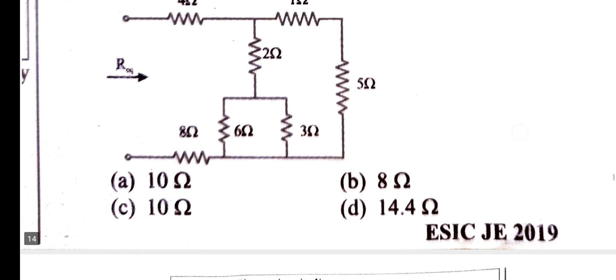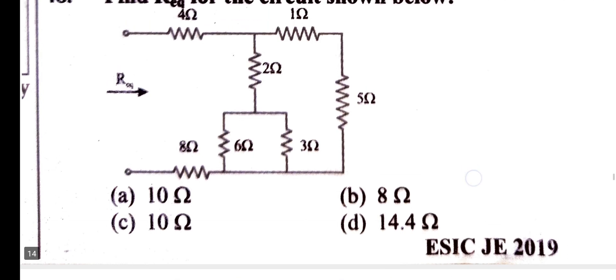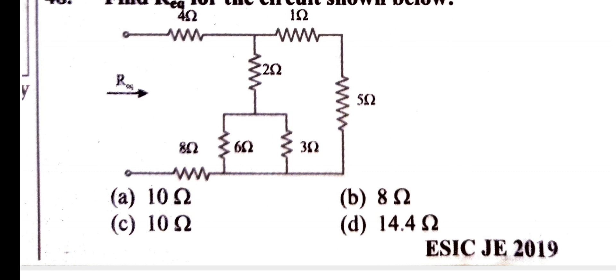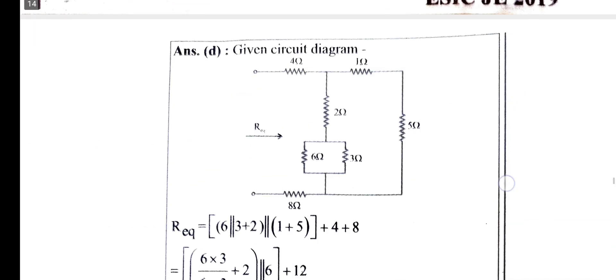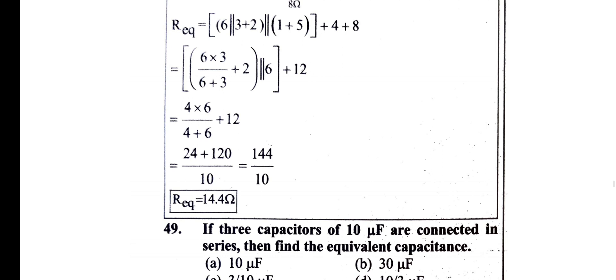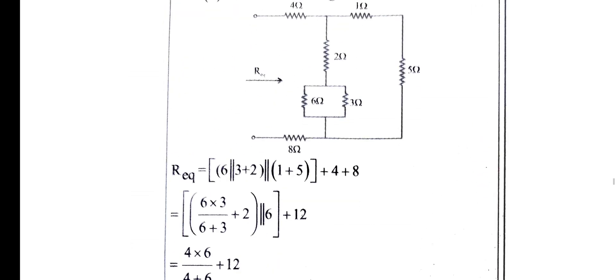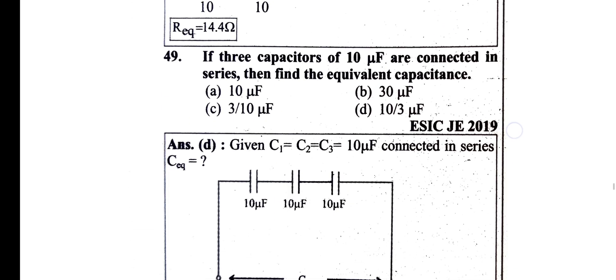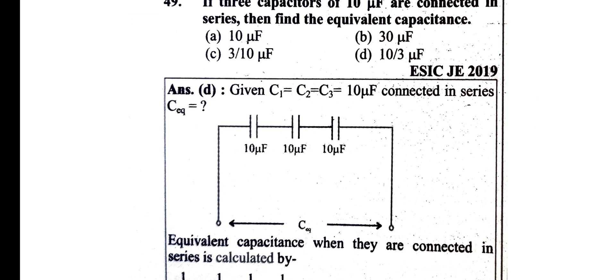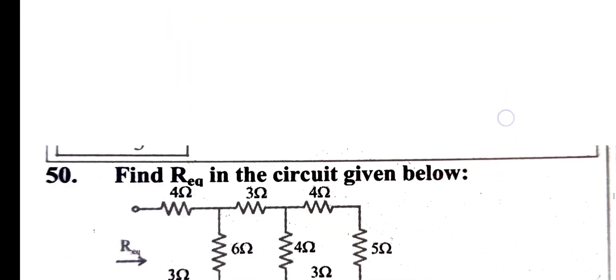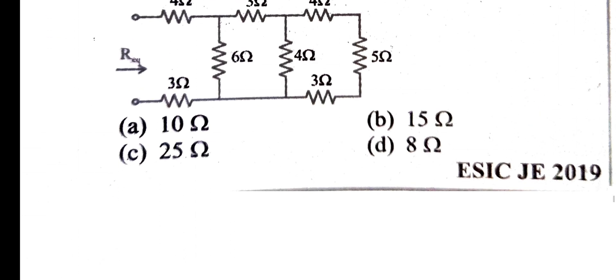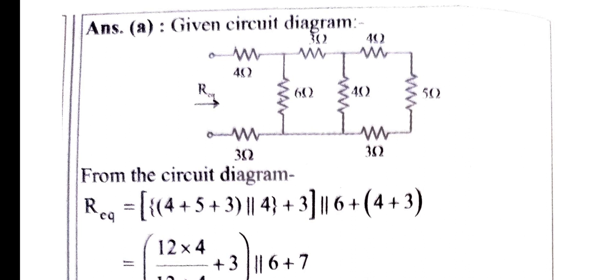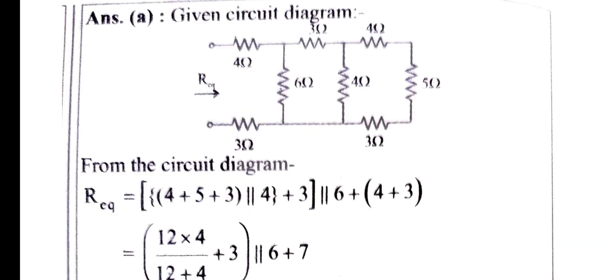Now using the figure: 6 parallel to 3 plus 2, then 3 plus 2 is parallel to 1 plus 5. Solving gives 14.5. If 3 capacitors of 10 microfarad are connected in series, the equivalent capacitance — series formula gives 1 by C equals 3 by 10, so C equals 10 by 3 microfarad.